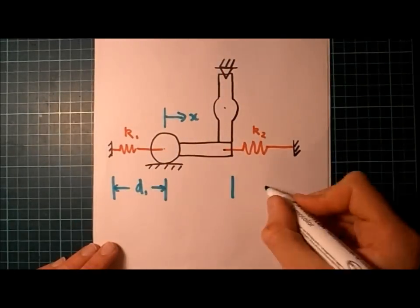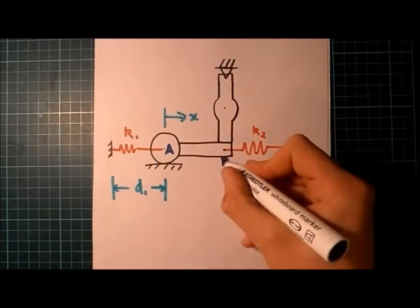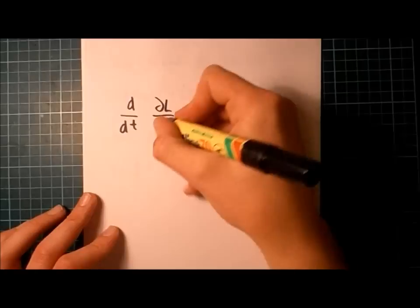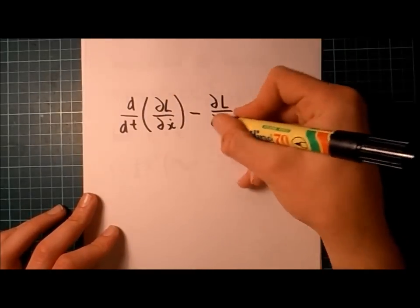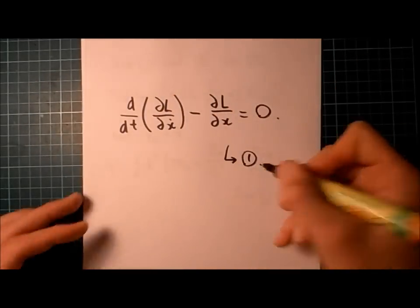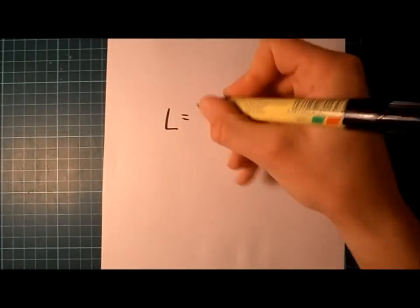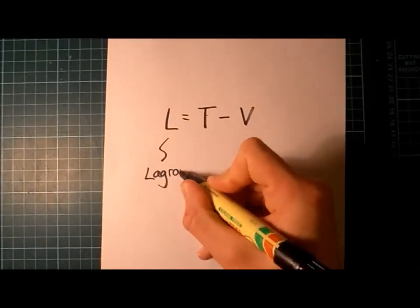So here's where we're headed with this problem. We've got to find an expression of L in terms of x and x dot, take partial derivatives, and substitute into Lagrange's equation, and solve. So first things first, finding L. L is T minus V.